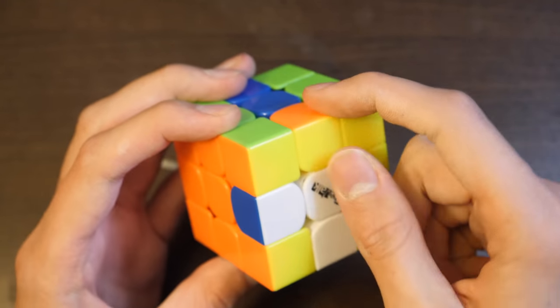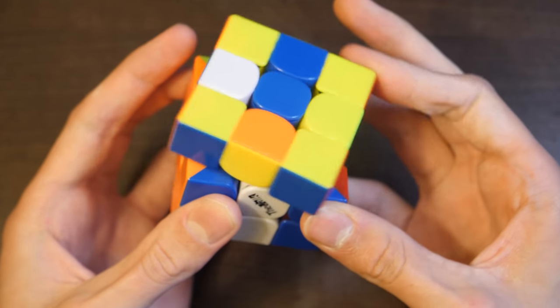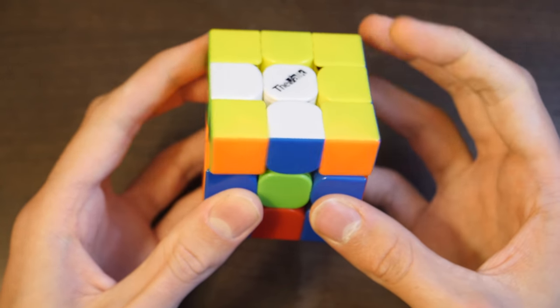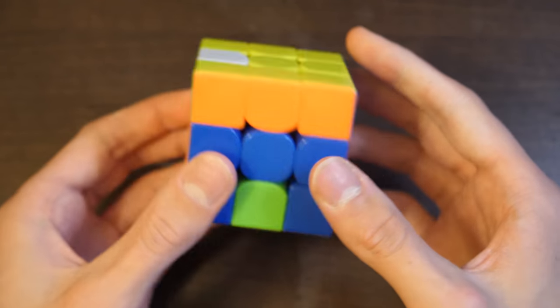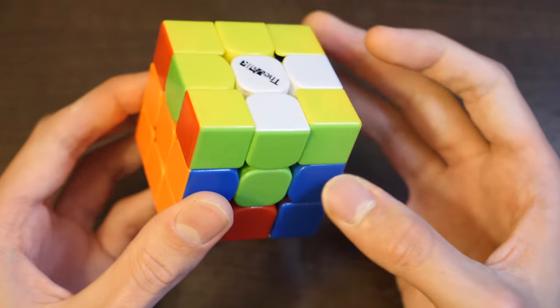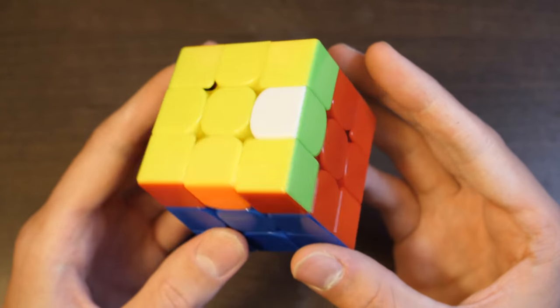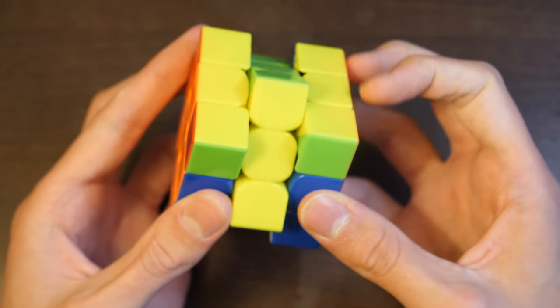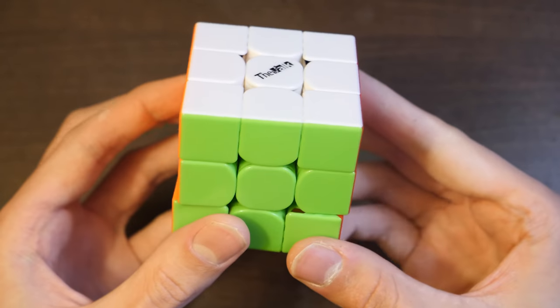He's first going to set up the orange-yellow back here, and then what he should have done is a U to solve the UR and UL edges. But instead he did a U' which set these up in the opposite position they should be. Luckily it wasn't too bad because he ended up getting a case like this, which can be solved pretty quickly if you know the H perm. But that was definitely a mistake.